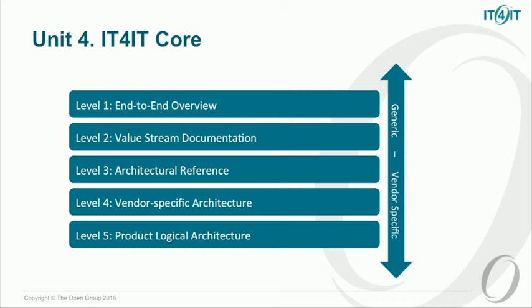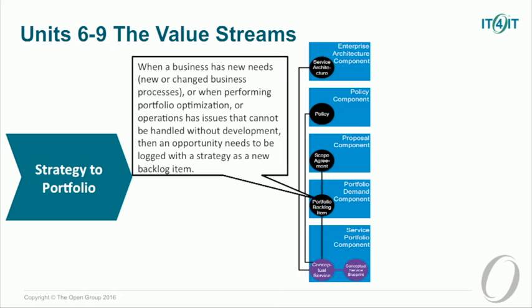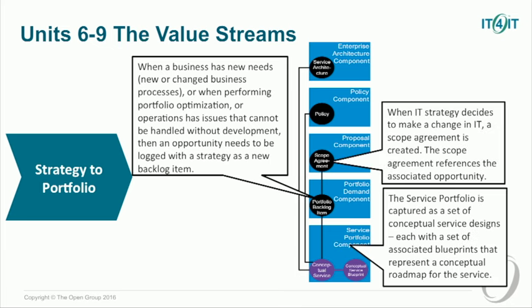Unit four is called IT4IT Core and corresponds to chapter three of the reference architecture. In this unit you'll be learning about the five abstraction levels of the reference architecture — a lot of focus on level one, concepts for level two and level three, and just an overview of abstraction levels four and five, which are left for vendor-specific implementations. The last few units look at the objectives of each value stream, the benefits of implementing each value stream, key performance indicators, the purpose of individual functional components, and key data objects associated with a functional component.